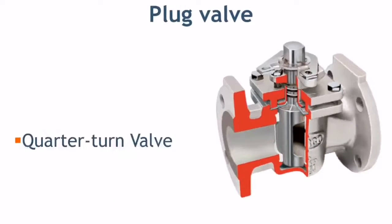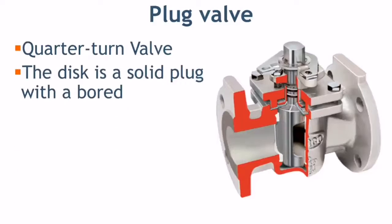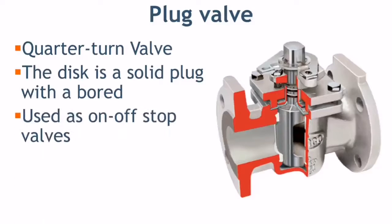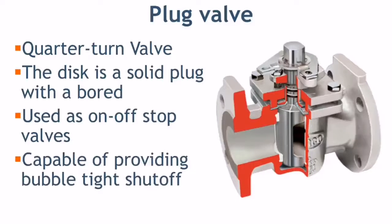Plug valve is a quarter-turn rotary motion valve that uses a taper or cylindrical plug to stop or start the flow. The disk is in a plug shape which has a passage to pass the flow. Plug valve is used as an on-off stop valve and is capable of providing bubble-tight shutoff. Plug valve can be used in vacuum to high pressure and temperature applications.